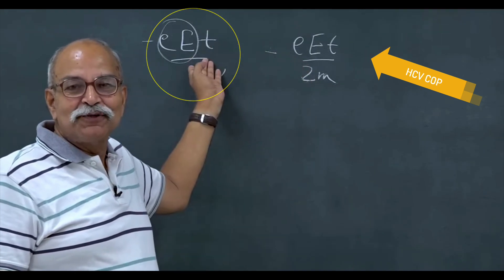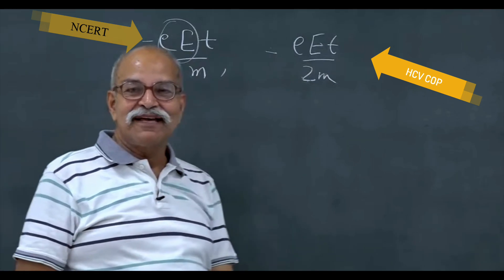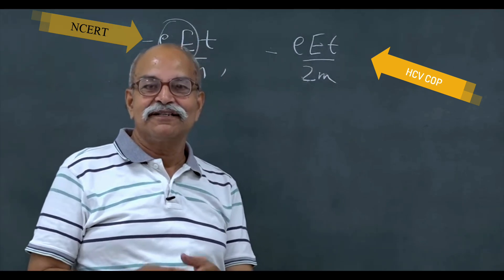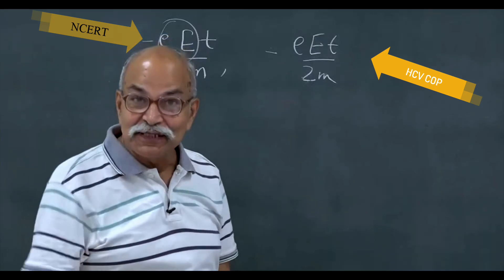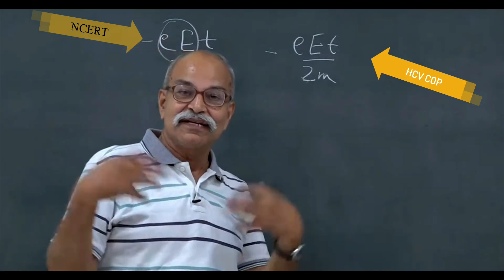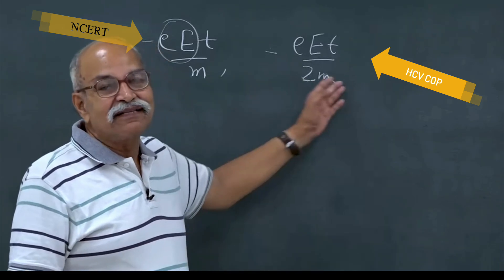People here also do something similar, but then they bring some fancy ideas that the velocities are distributed, velocities are not the same, and what kind of distribution is there, and from there they try to get the average velocity and all that. That is why the results are different.